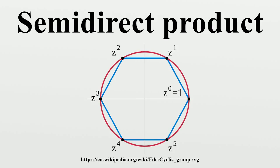Relation to direct products: Suppose G is the semi-direct product of the normal subgroup N and the subgroup H. If H is also normal in G, or equivalently, if there exists a homomorphism G to N which is the identity on N, then G is the direct product of N and H.